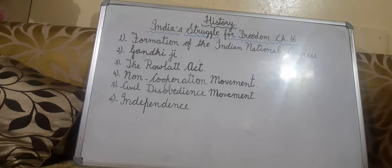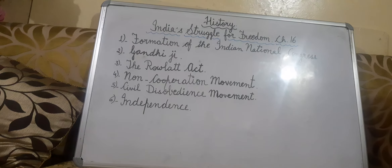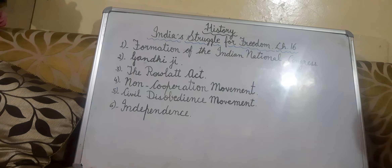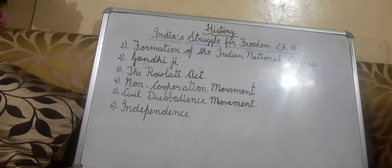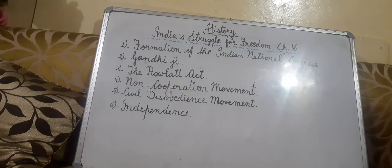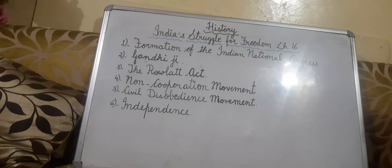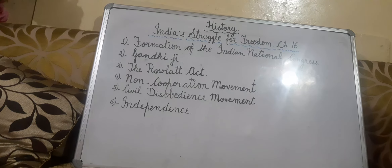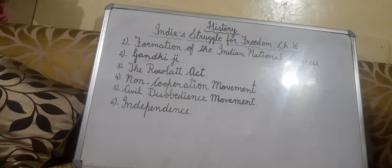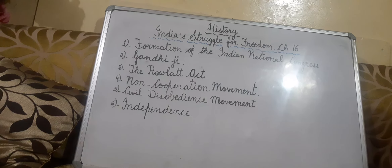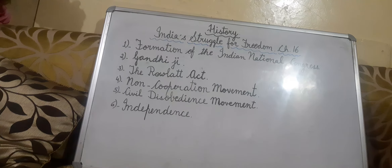Now we come to the Non-Cooperation Movement. Gandhiji decided to launch the Non-Cooperation Movement in the year 1920 with the support of Congress, to protest against the wrongs done and to demand Swaraj, or self-rule. Non-cooperation means not cooperating with the foreign rulers. Students refused to go to schools and colleges, and lawyers refused to go to the courts. Gandhiji asked the people to take up spinning and weaving and boycott all foreign goods.